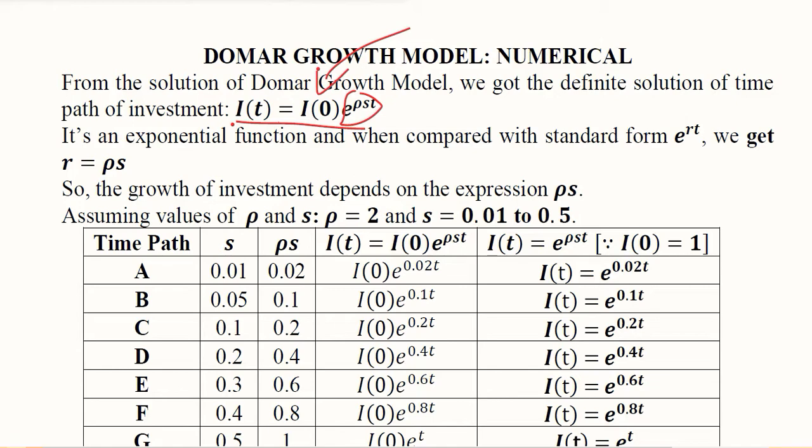We have to focus on this part and when we compare it with the standard form of the natural exponential function, we realize that t is the variable part and r is actually the rate of growth. When we compare, instead of r in the standard form we have ρs. The value of r from the standard form, in this case, is ρs.